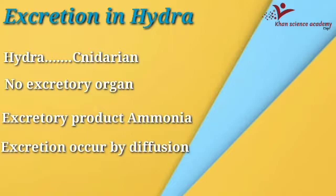Since there is no special excretory system or excretory organ in Hydra, the excretory process occurs by diffusion. The metabolic waste — ammonia — is removed from Hydra's body directly through diffusion. So Hydra is a cnidarian, it has no excretory organ, and the excretory product ammonia is removed by diffusion.